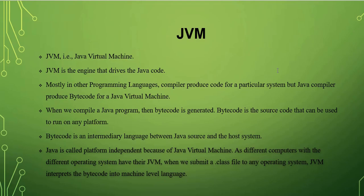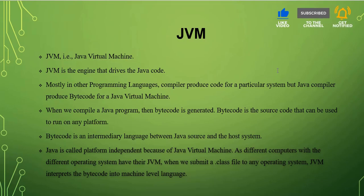What is the difference between compiler and interpreter? The compiler compiles the whole program and gives a list of errors, whereas the interpreter executes line by line — that is the main difference. C and C++ use the compiler translator, Python uses the interpreter, and Java uses both the interpreter and the compiler.